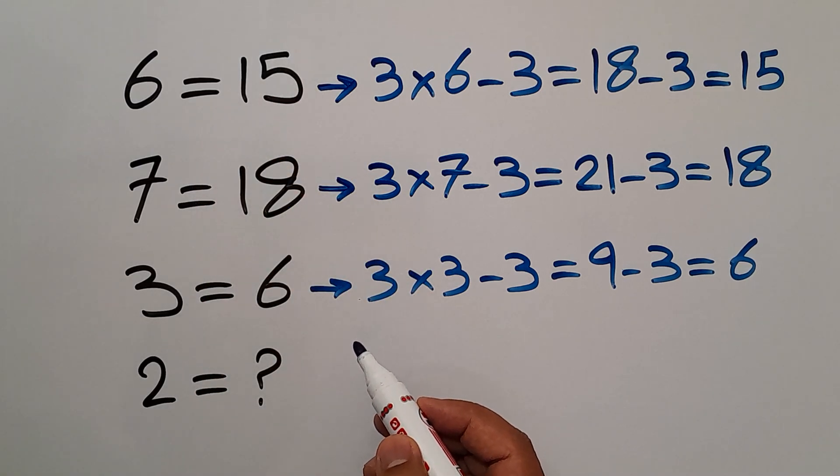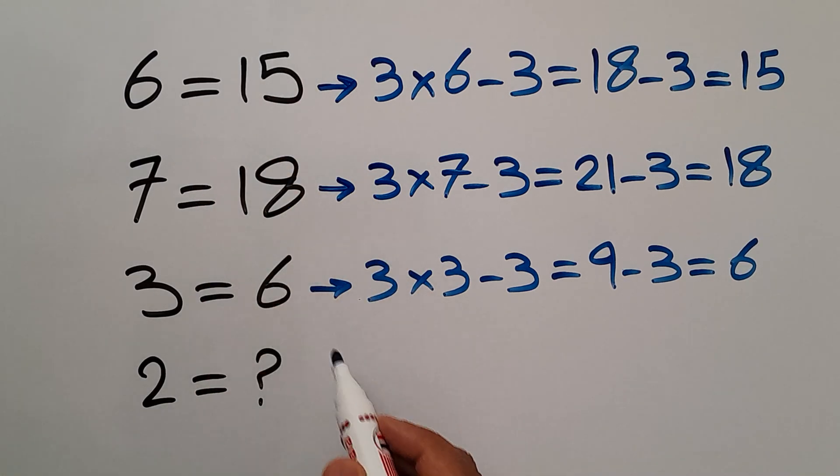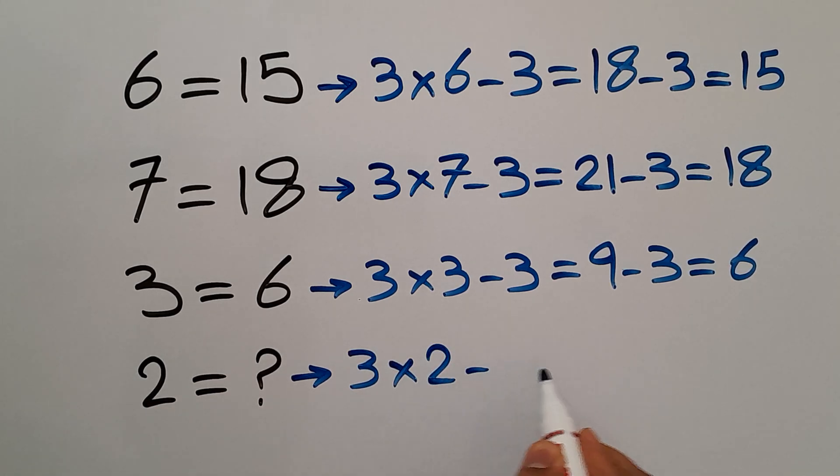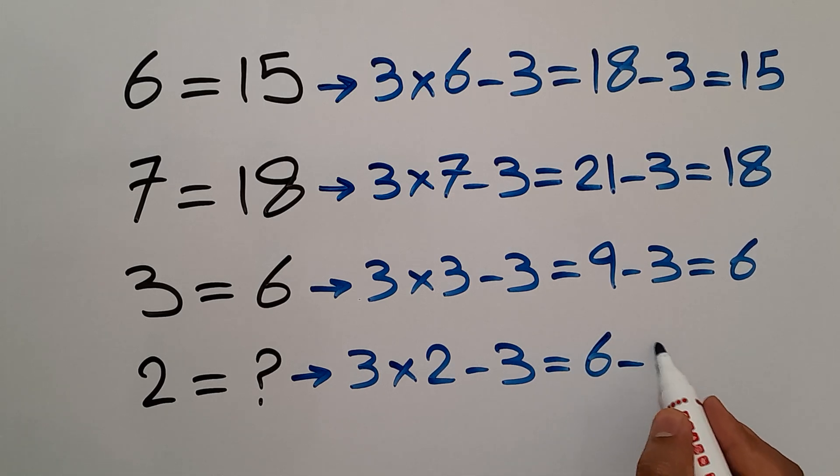Now, let's use this pattern to find the missing number. 3 times the left-hand side number, which is 2. So, 3 times 2 minus 3 equals 6 minus 3, which equals 3.